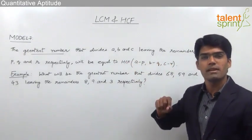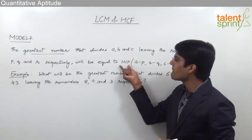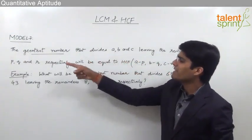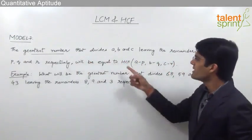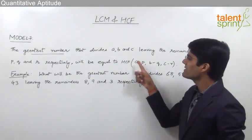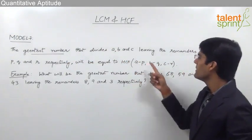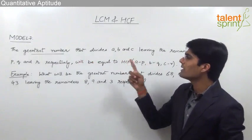Then such a number can be obtained as the highest common factor of the dividends minus the remainders respectively. That means the first dividend a minus the remainder p, second dividend b minus the second remainder q, and the third dividend c minus the third remainder r.